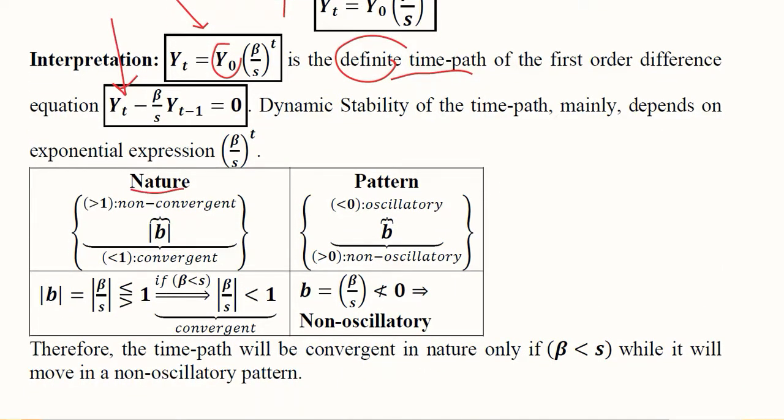This is the interpretation. We have to check the nature. For that we see that if beta in absolute terms is less than one, it requires that beta should be less than s, that the numerator should be less than the value of s. If this happens, we have a value less than one, meaning it will be a convergence case.